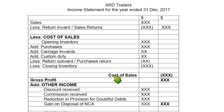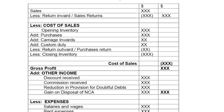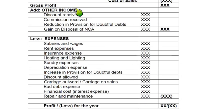We write cost of sales twice: once as a heading labeled 'less cost of sales' and once as the final value. If we deduct cost of sales from the net sales figure we get gross profit. Gross profit is not the actual profit — it is an intermediary profit that needs to be adjusted for two other items: other income and expenses. Other income means income that is not part of day-to-day operations of the business, or any income not directly related to selling goods. Any item labeled as 'received' — discount received, commission received, rent received — are all other income.